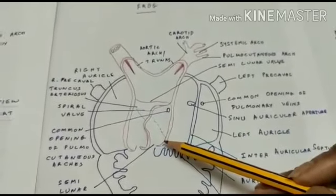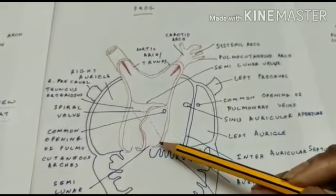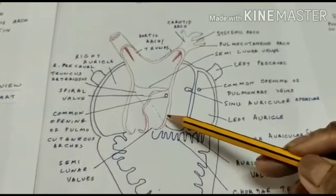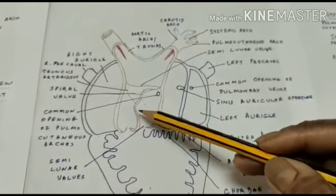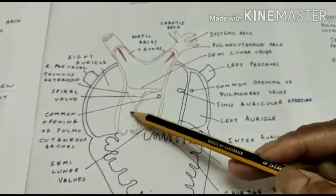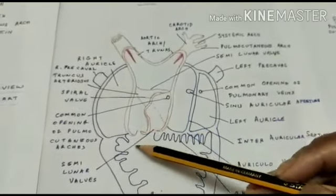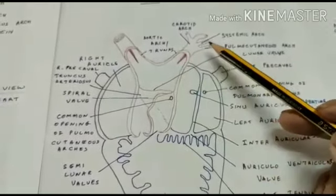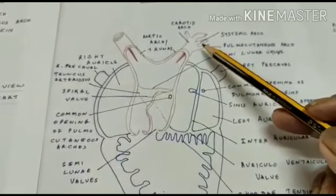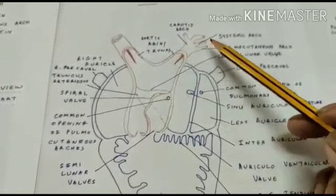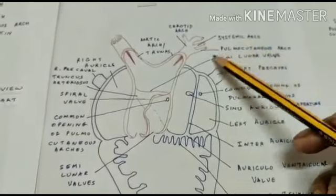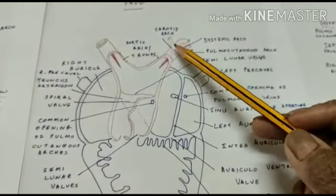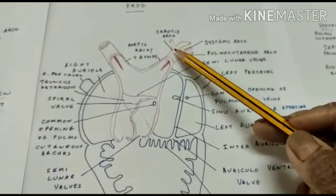Now the pylangium contracts. Once it contracts, it pulls the spiral valve towards the wall of the pylangium, and therefore the cavum aorticum becomes larger and the mixed blood rushes into the cavum aorticum and ultimately reaches the systemic arch. The systemic arch carries blood to the various parts of the viscera. However, this mixed blood is not allowed into the carotid arch because of an obstruction in the form of a labyrinth.